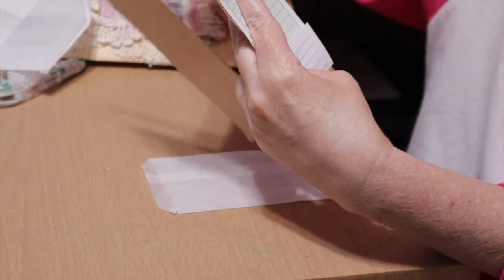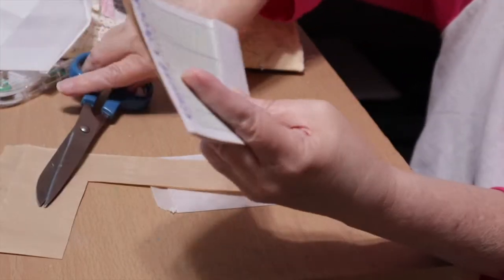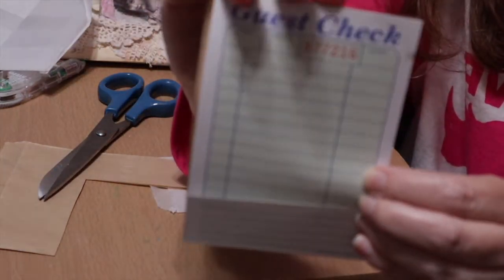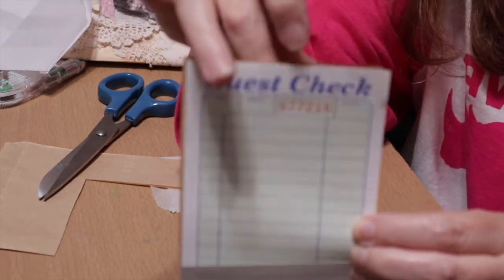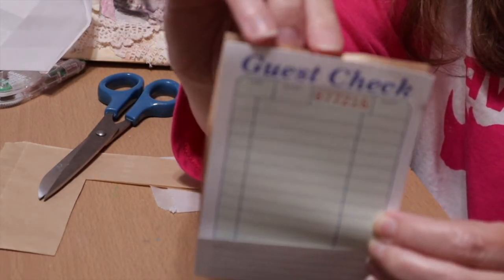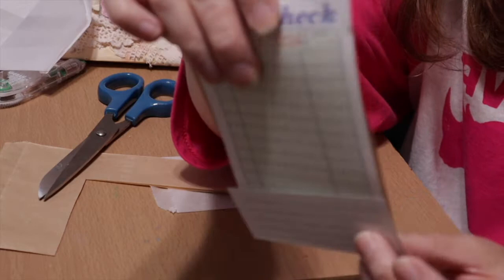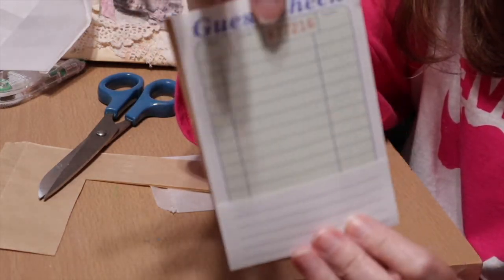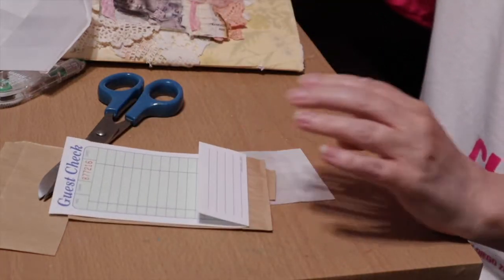I'm going to cut my bag, then I will attach my guest check, and I will seal up this side. I have two pockets—one in the bag and one between the bag and the guest check. And I have a journaling bag on the back. That's another way to decorate. Up to you.